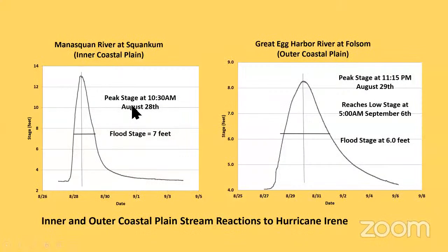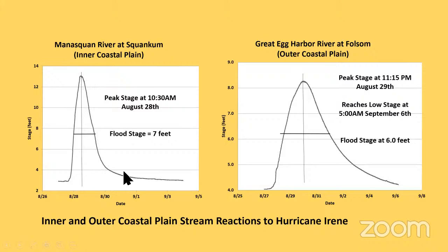Here's some data from Hurricane Irene. It came ashore on the 17th of August. In the intercoastal plain, you can see that the water level shot way up and then pretty quickly came back down again. This is a flash flood: the water rises quickly, it rises a lot, and then it settles down fairly quickly.